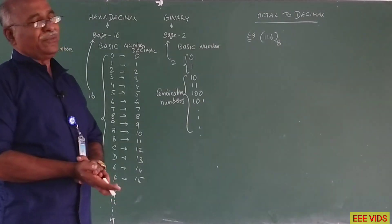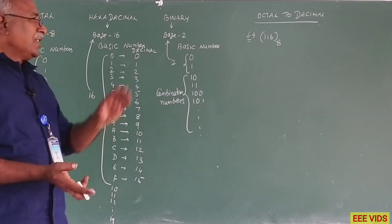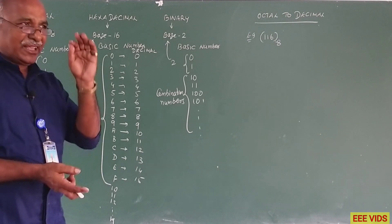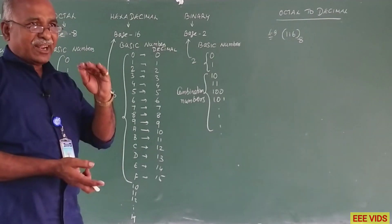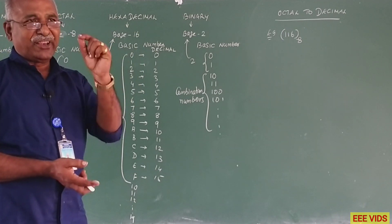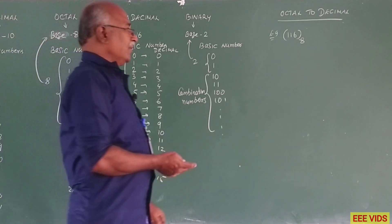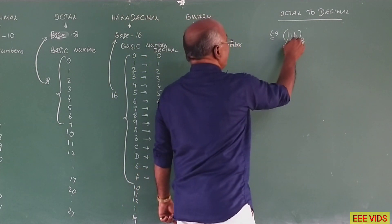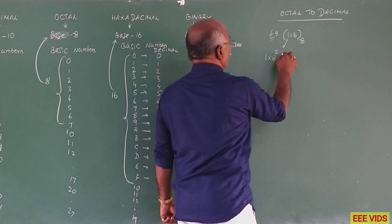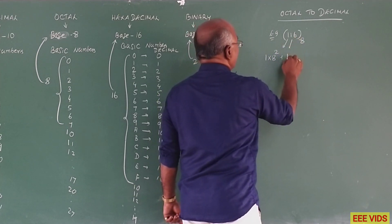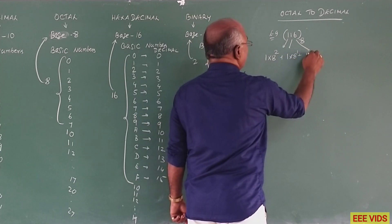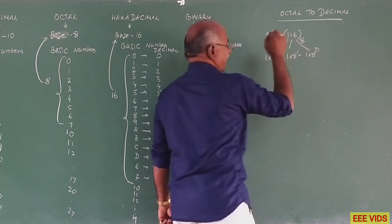The decimal number is 116. The numbers being converted should have the base used by power. One digit should be base used by power: 1 into 8 power 2, plus 1 into 8 power 1, plus 1 into 8 power 0.